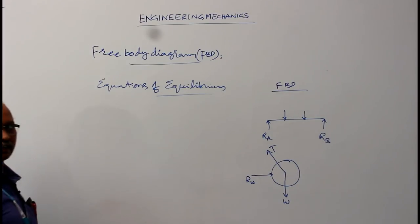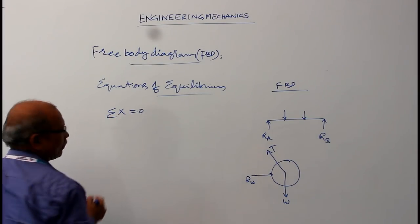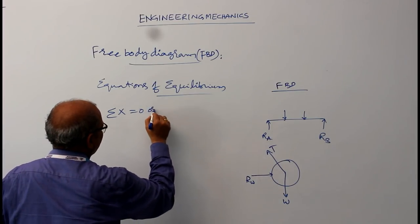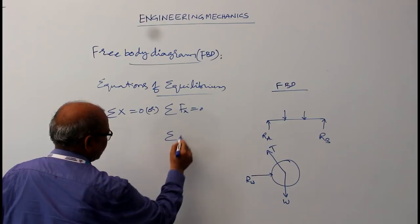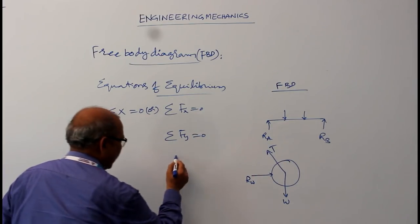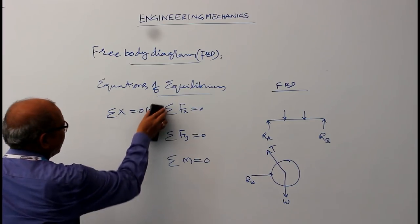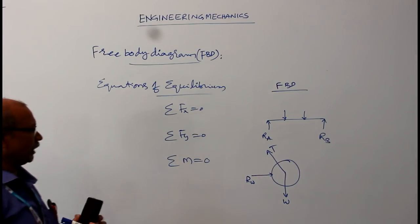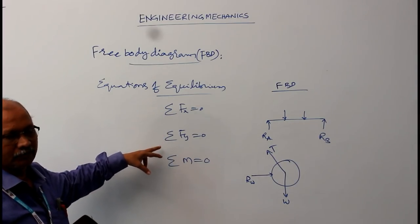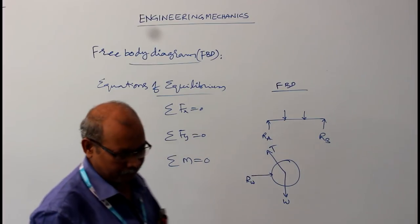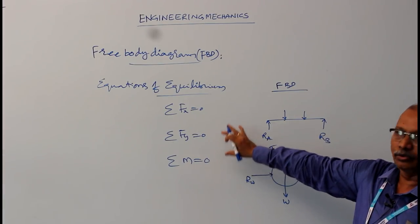So along with the free body diagram, we should know the equations of equilibrium. What are these equations of equilibrium? They are: sigma Fx equal to 0 — that is, forces in the x direction; sigma Fy equal to 0; and sigma moments equal to 0. These are called the equations of equilibrium. We consider forces acting in two directions, x and y, and their moments — that is, only two-dimensional forces.